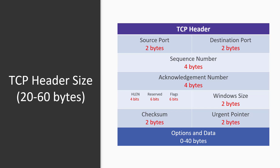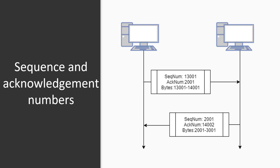All the data bytes that are to be transmitted are numbered, and the beginning of this numbering is arbitrary. Sequence numbers are given to the segments so as to reassemble the bytes at the receiver end, even if they arrive in different order. The sequence number of a segment is the byte number of the first byte that is being sent.